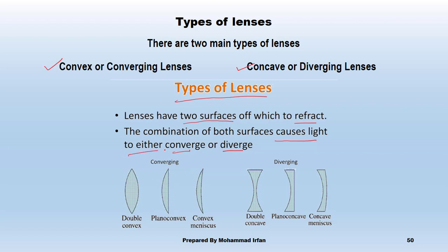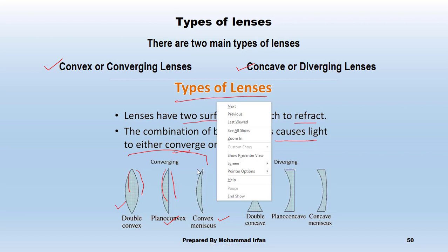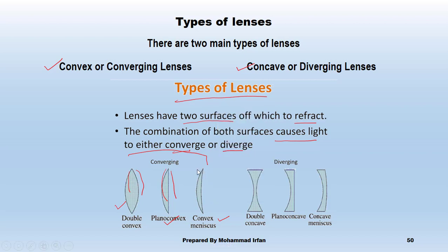Converging lenses are of many types. Number one: double convex — it has two curved surfaces on either side. Second is planoconvex — one side is plane, the other side is curved. Third is convex meniscus — both sides are curved such that one is convex and one is concave.